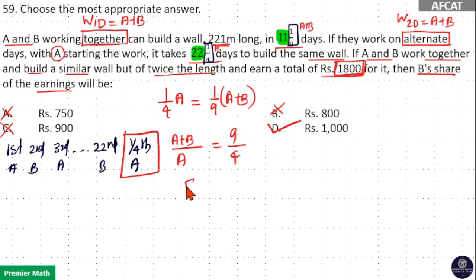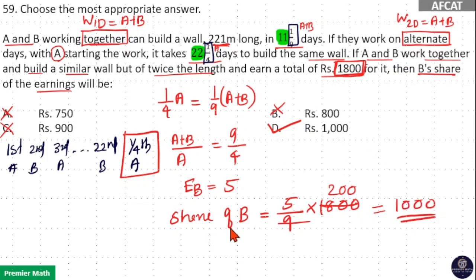Or you can calculate: efficiency of B is 5 units out of total efficiency 9 units. So 5/9 of total money earned by A and B, which is 1800 rupees. 9 goes 200 times in 1800, so 5 times 200 equals 1000 rupees. So option D is your answer.